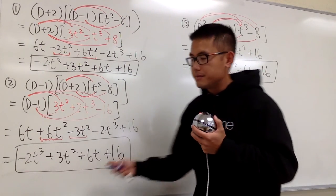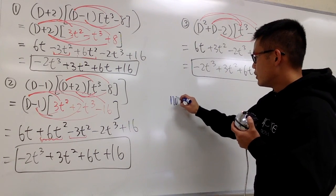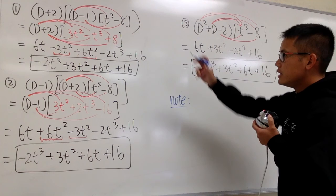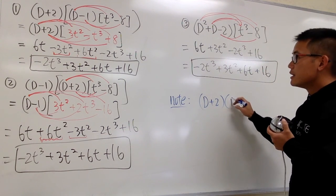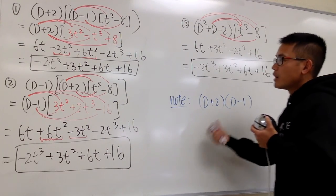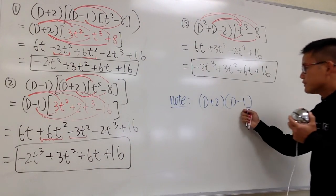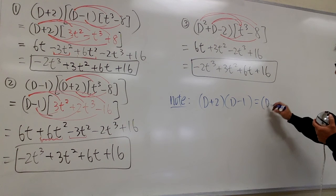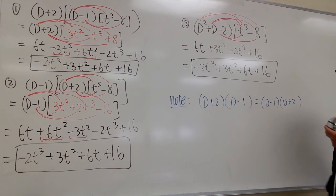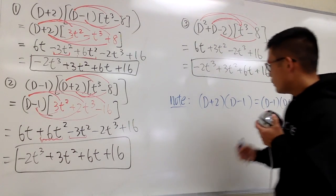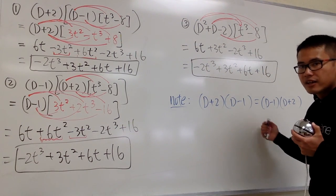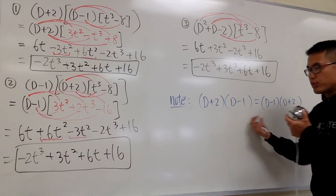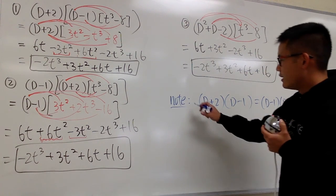Here is the summary. Examples 1 and 2 show that (D+2)(D-1) is the same as (D-1)(D+2). If you multiply these operators — D times D is D², D times negative 1 is negative D, negative D plus 2D is plus D, and 2 times negative 1 is negative 2 — you get D² + D - 2, which is exactly number 3.